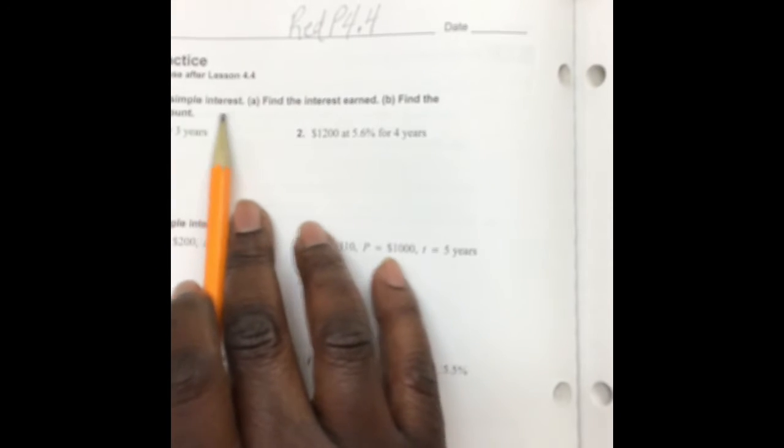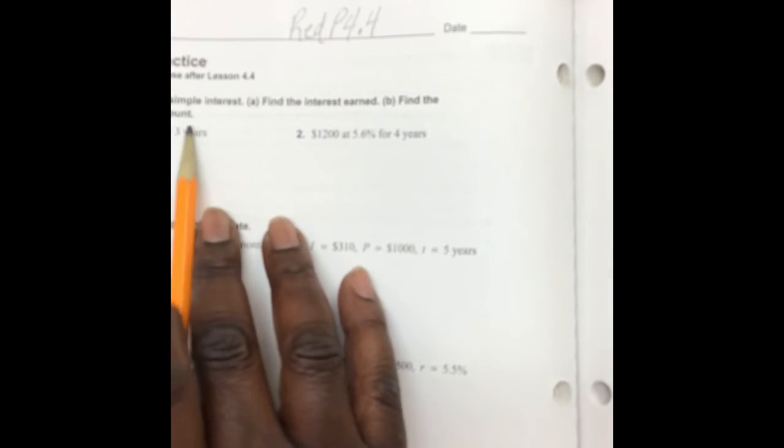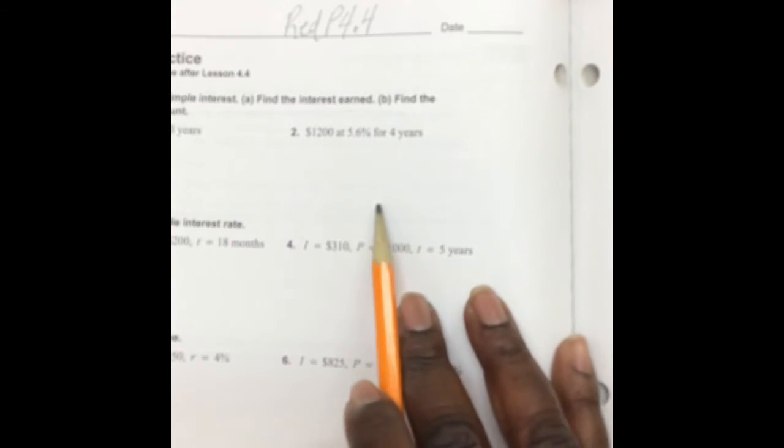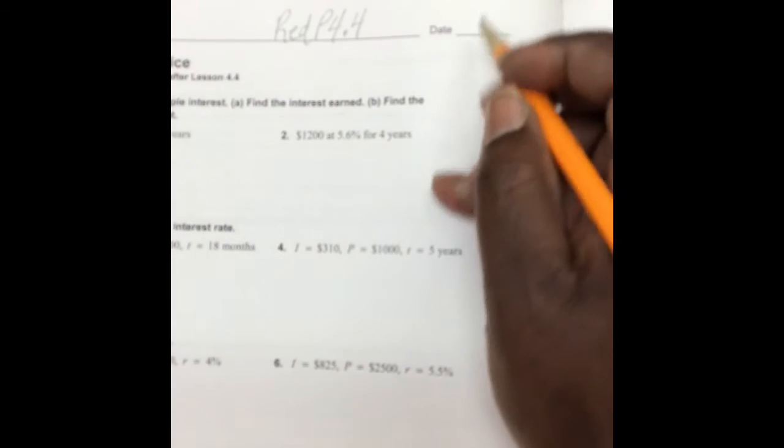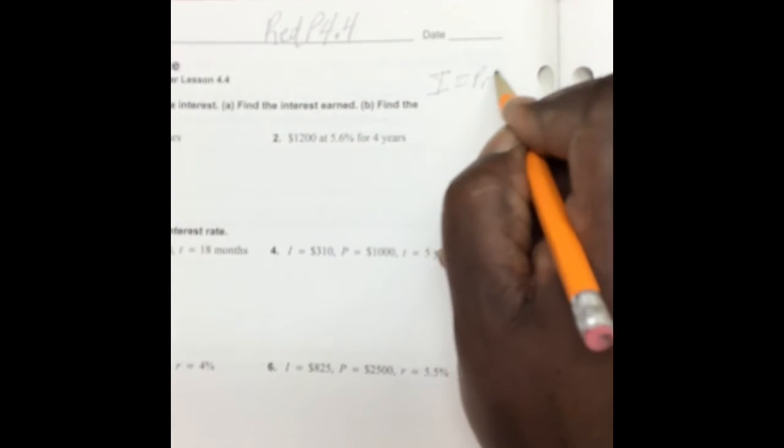An account earns simple interest. Find the interest earned and find the balance of the account. So let's get started. First we know that the formula for interest is I equals P times R times T.